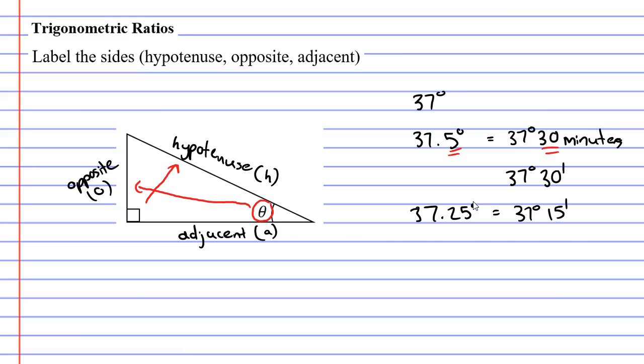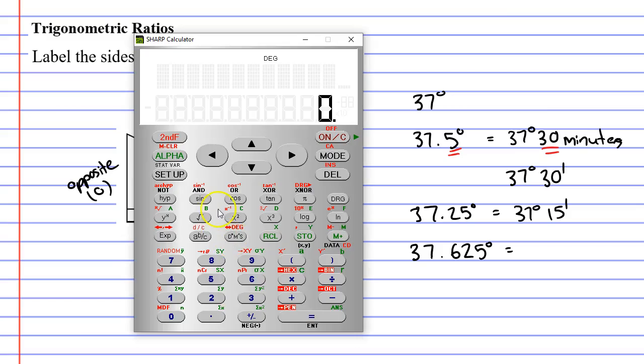So, what if we had an angle that was a bit more complicated? For example, let's say we have 37.625 degrees. What would that change into if I put it in degrees, minutes, and seconds? Well, this is where we want to use a calculator to do all the work for us.